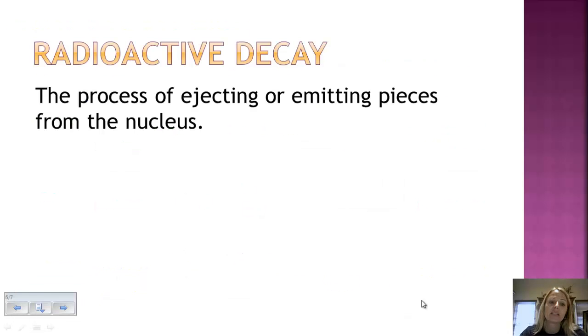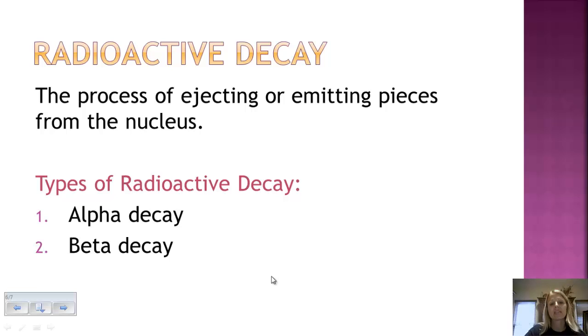So leading us to radioactive decay. Like we said, in nuclear reactions, there is a change in the nucleus. It changes from one element into another. So there has to be a loss or change in the number of protons. So it's the process of ejecting or emitting pieces from the nucleus. And we're going to focus on alpha decay and beta decay.